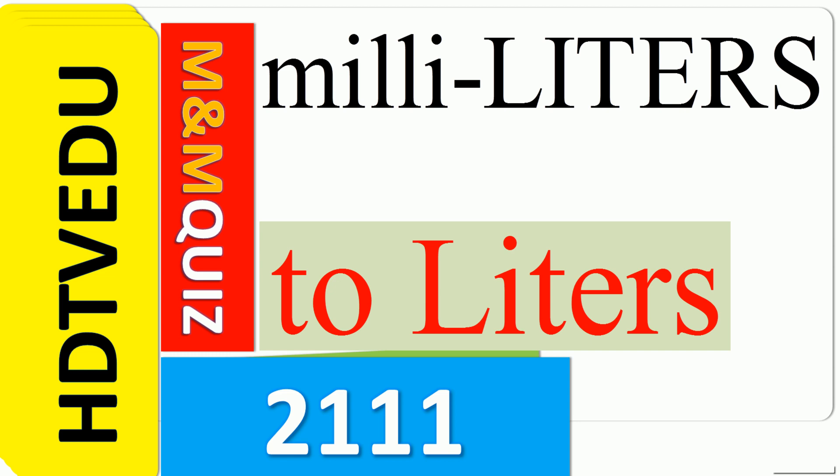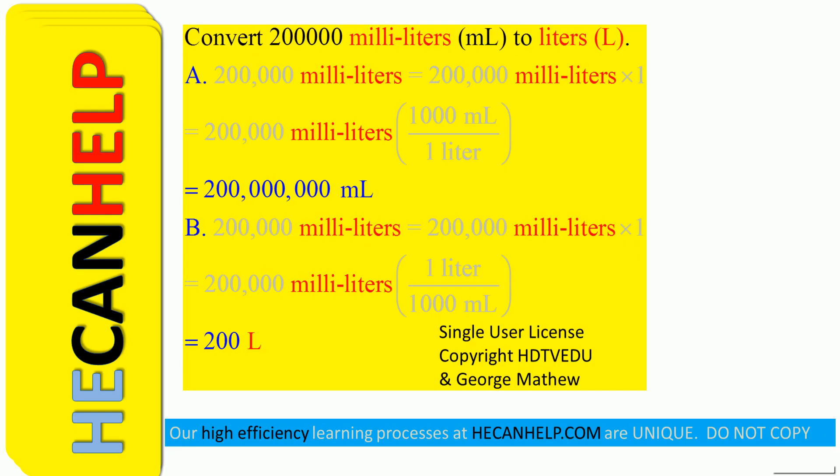Milliliters to liters. M&M quiz 2111. Convert 200,000 milliliters ML to liters L. Is it A or is it B?